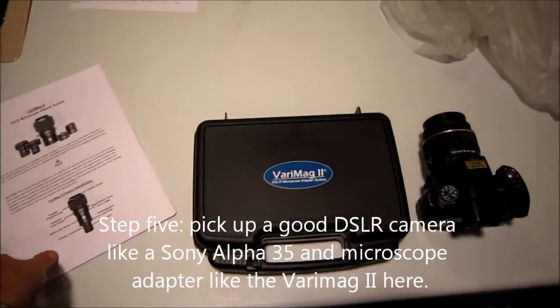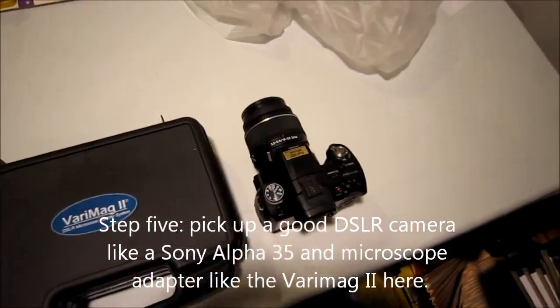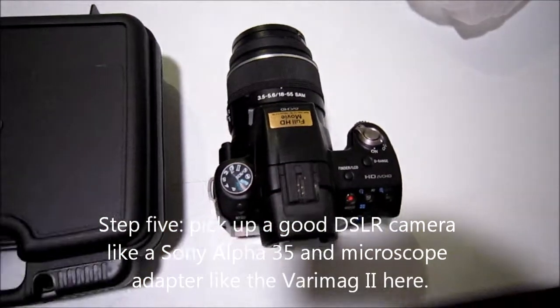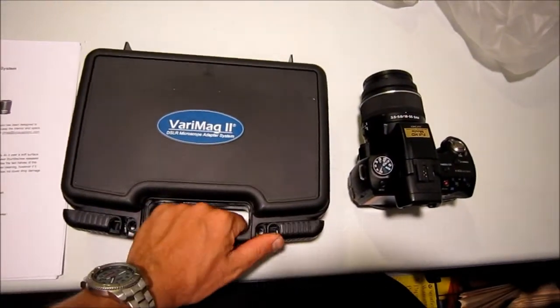Once the laptop is mounted in and everything's set up on that, step five here is get yourself a good DSLR camera. In this case, we've got ourselves a Sony Alpha 35, excellent camera, and a microscope adapter. We're going to go with the VariMag 2. The VariMag 2 comes as a complete kit.